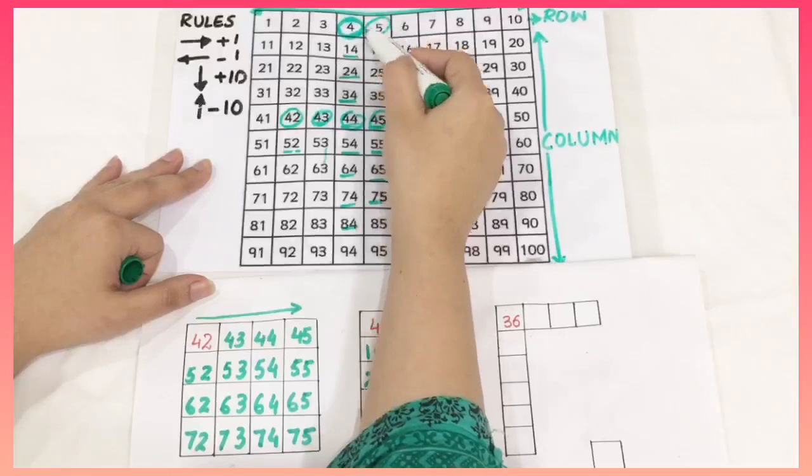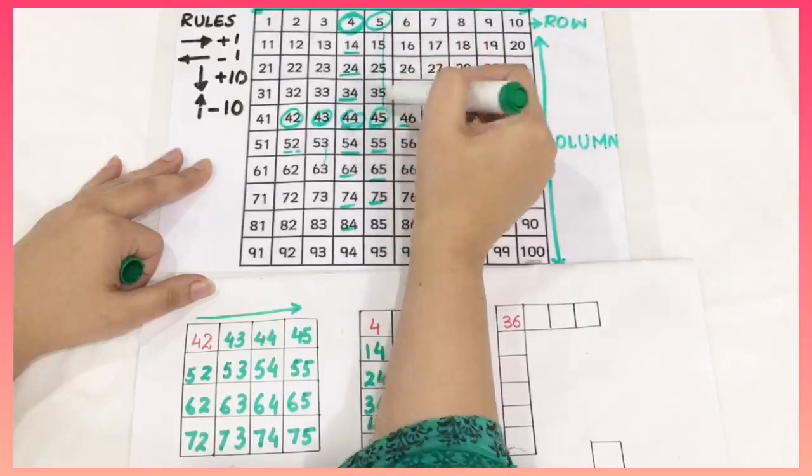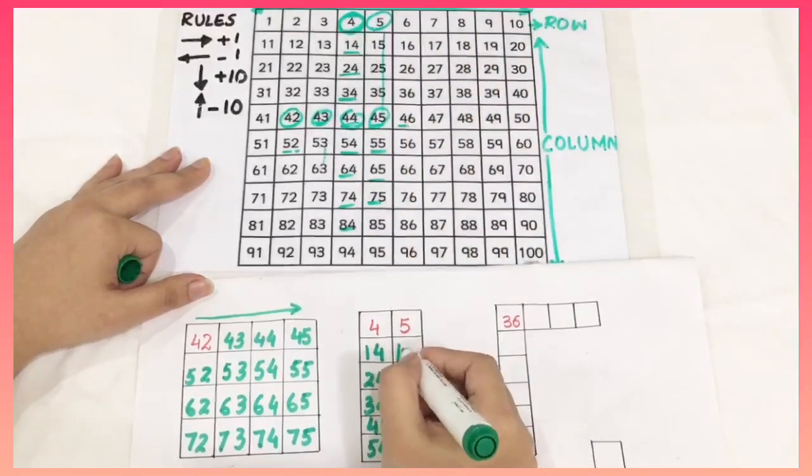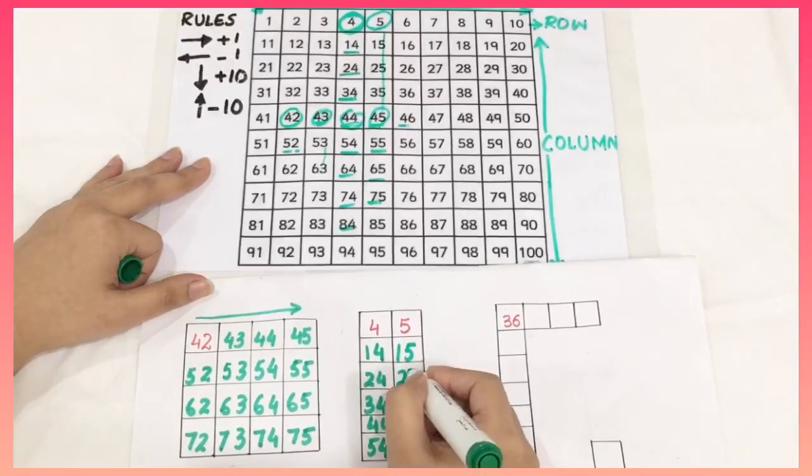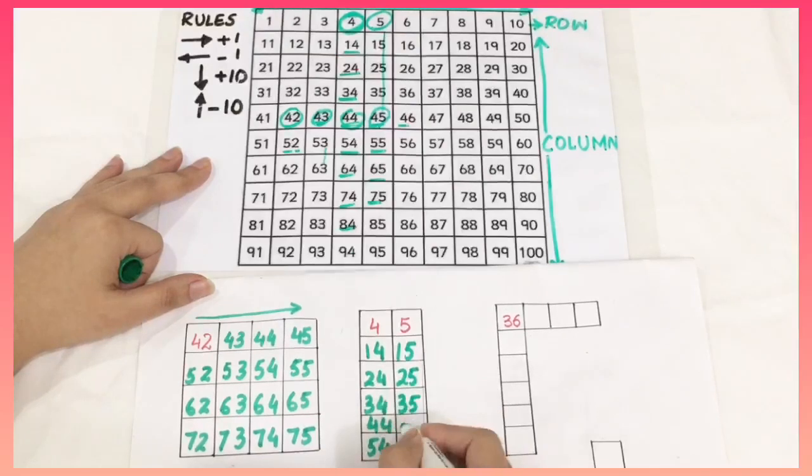Now I have to fill the 5th column. This is 15, this is 25, this is 35, 45 and 55.